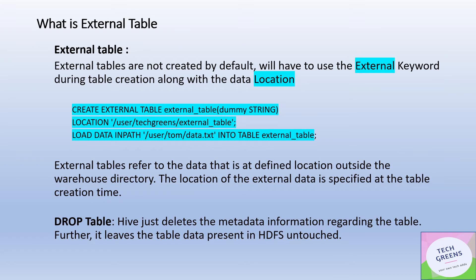External tables are not created by default — you have to use the keyword EXTERNAL while creating the table. As you can see in the code snippet, you do: CREATE EXTERNAL TABLE table_name. You will also have to provide a location — a path other than the default data warehouse directory — where you want to keep the data. If you drop an external table, Hive will just delete the metadata; the data remains untouched and stays on the underlying HDFS file system.